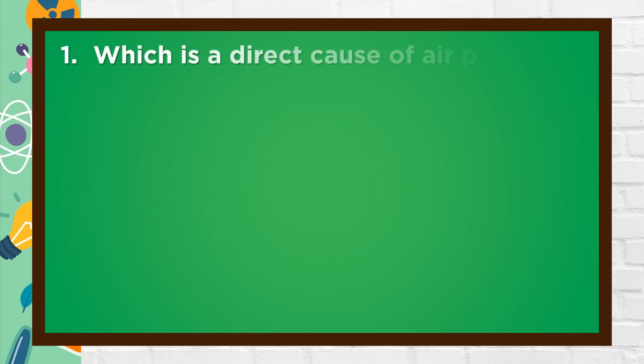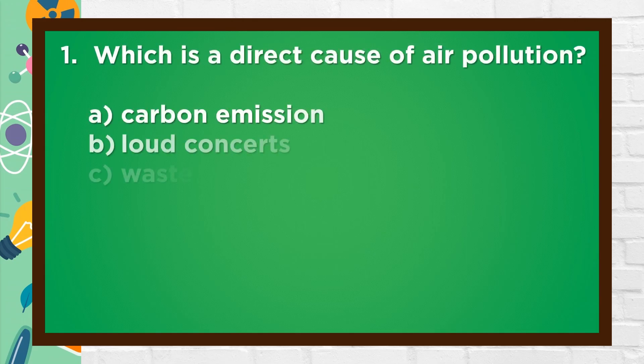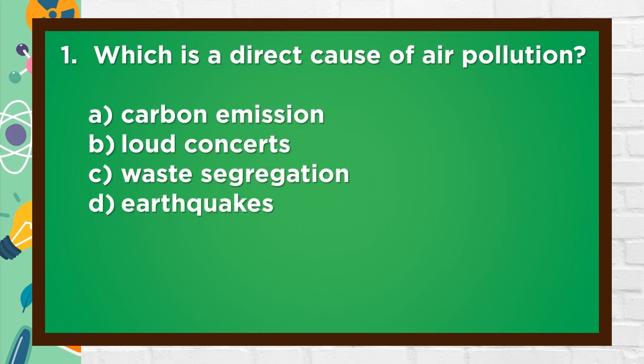Number 1. Which is a direct cause of air pollution? A. Carbon emission. B. Loud concerts. C. Waste segregation. D. Earthquakes.